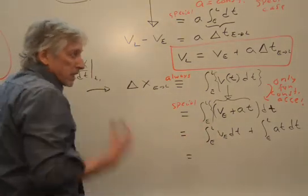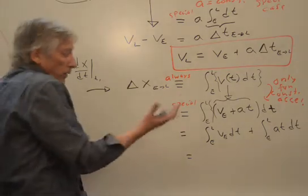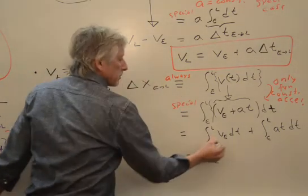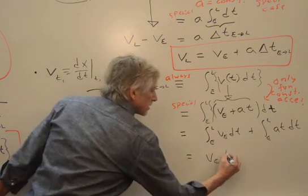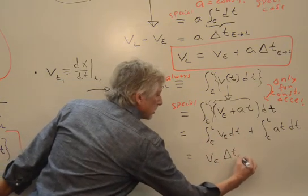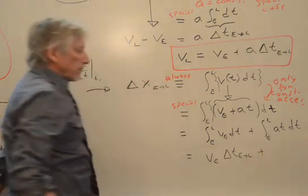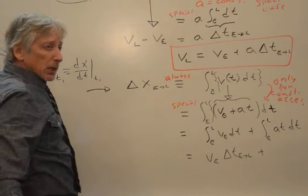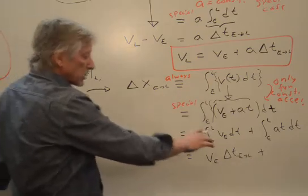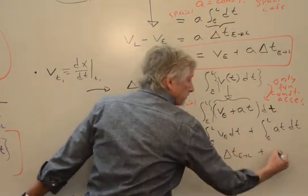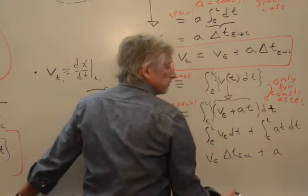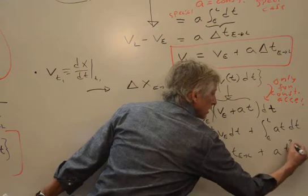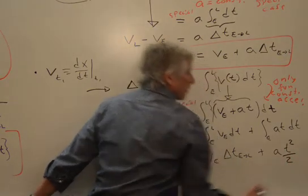Velocity earlier is a particular thing. It's not something, it's just whatever it was. So that's v e. That comes out. Integral dt is delta t. Plus, ah, acceleration is constant again. So in this special case, acceleration pulls out. The integral of t dt is t squared over 2.